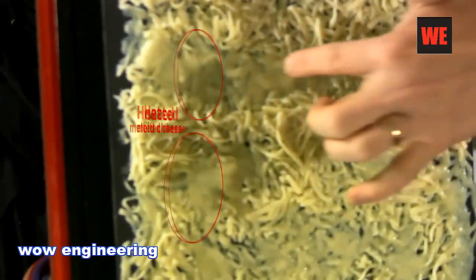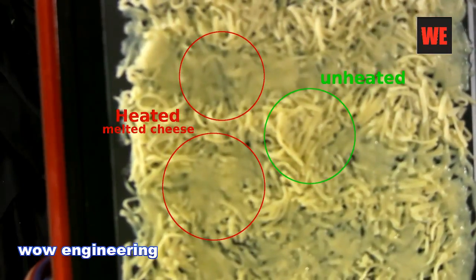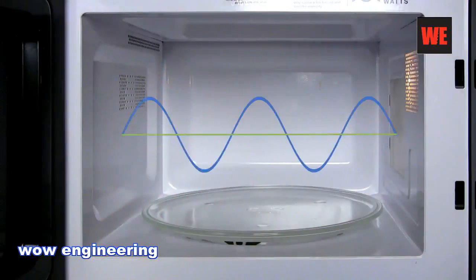You can see on here sections where the cheese is completely melted and other sections where it's completely unheated. The oven's metal walls only reflect waves of a length that fits inside the oven. This standing wave causes hot and cold spots inside the oven.